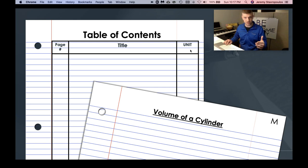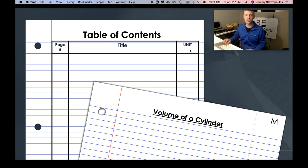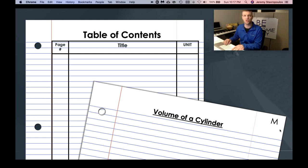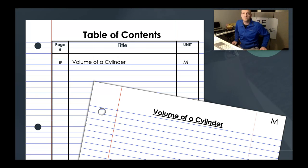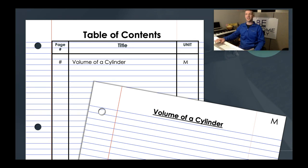Get your title going — we are talking about volume of a cylinder. You'll notice at the top we've got the M. What do you think that's for? Let me know in the chat. All right — measurement. So this is our measurement unit.